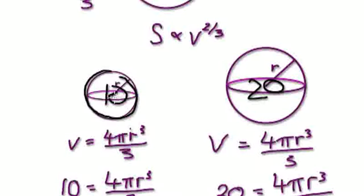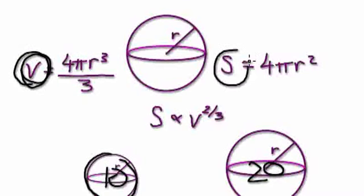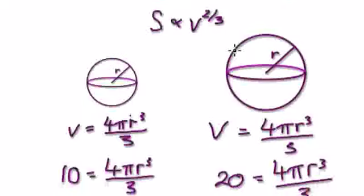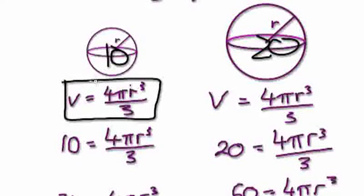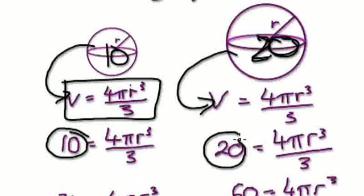In order to work out the surface area, we have to jump to the radius first, and then from the radius we can work out the surface area. So we start with our volume formula and solve for the radius. Put 10 into V for the small sphere — it becomes this expression. Put 20 into V for the big sphere — it becomes this expression. The left-hand side represents our small sphere and the right-hand side represents our big sphere.